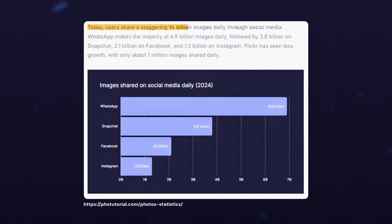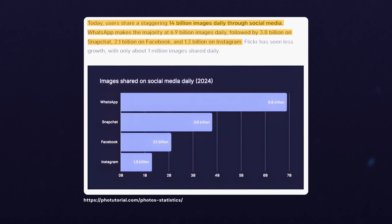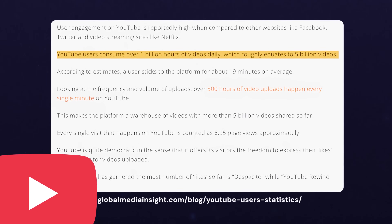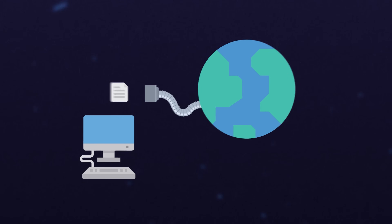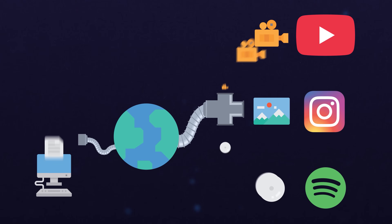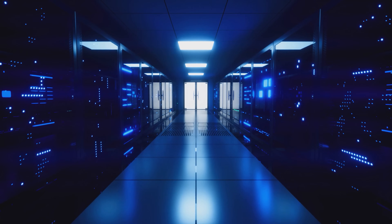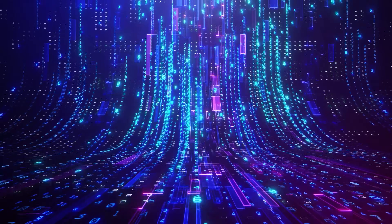14 billion images are served every day across major social media platforms, and 5 billion videos are served daily — and that's just on YouTube. Your little JSON server that just sends bits of text back and forth across the internet doesn't hold a candle in terms of bandwidth scale to apps like Spotify, YouTube, and Instagram. That's what media servers are optimized to do: stream massive amounts of data across the internet.